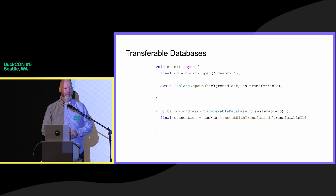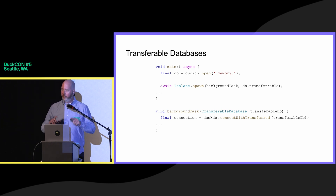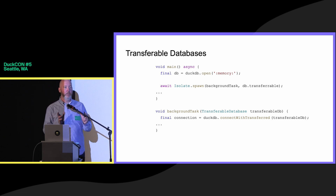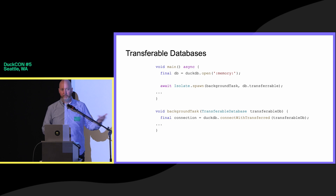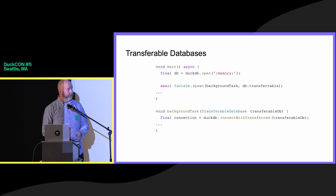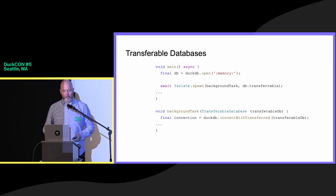Now, concurrency. Dart has a very unique take on threading — it has threads, but they're called isolates. What's unique about them is there's no shared memory; everything has to go through messages, and there are very strong limitations on what can be sent across that boundary. So we've invented a weak reference to the database called a transferable database, whose purpose is to strictly open up a connection on a background isolate. In Dart you have one main rendering isolate, so you definitely want to do your IO somewhere else. In this example, you open up a database, get a transferable connection to it, fire it off into a background task, and start querying your database.